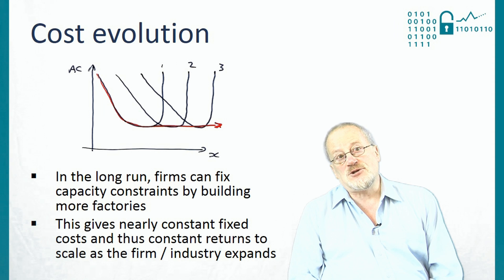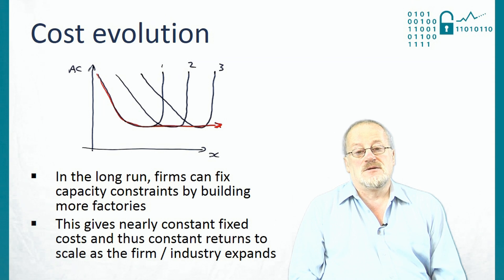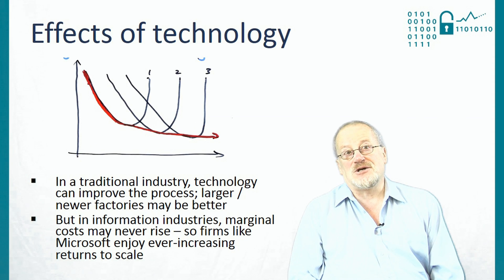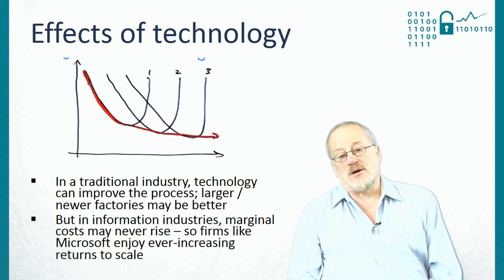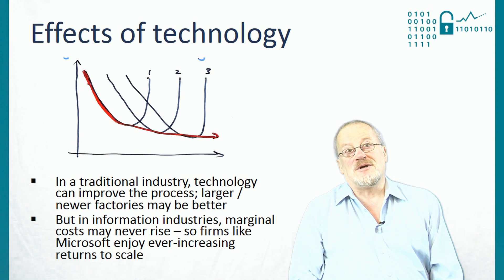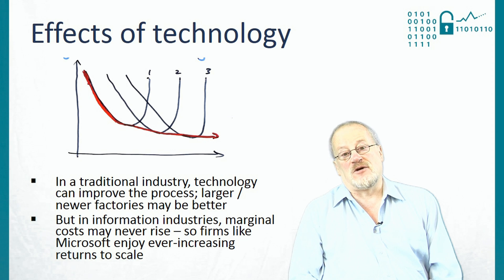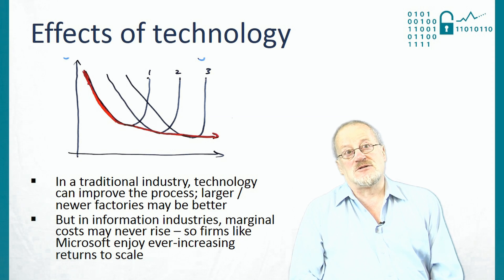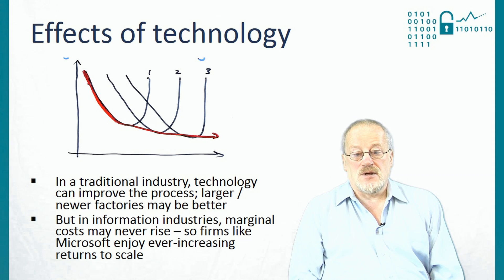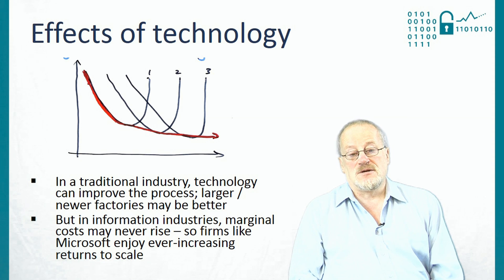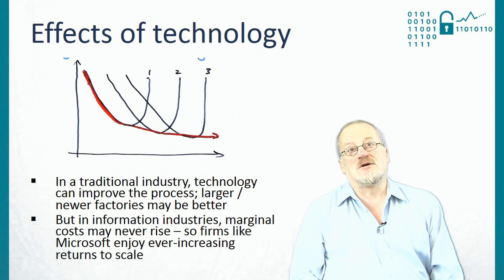When you look at information goods and services, technology has an effect because the marginal cost to Microsoft, for example, of copying one more instance of Windows or Office is very, very small. So once they have paid their huge fixed costs of actually writing the product, their average costs keep on going down. This means that marginal costs may never rise, and information goods and services firms can get ever-increasing returns to scale.